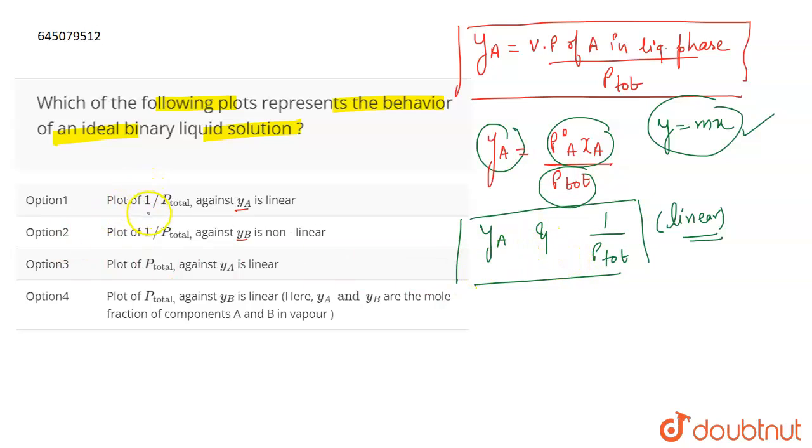If we look at the options, the first is the plot of 1 by P total against YA is linear. Yes, this is the correct answer for the question because according to the equation that we have derived, we can understand that it obeys the linear equation and from there we will be getting a straight line.